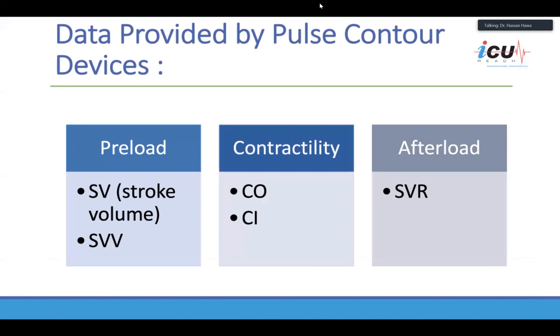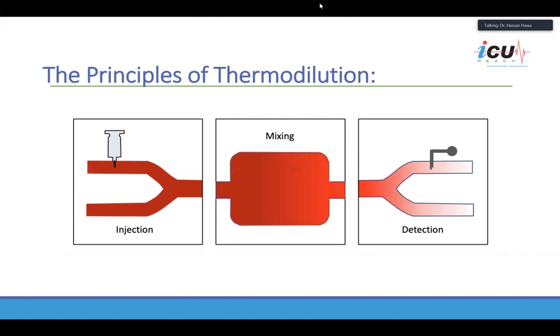The data you would get from pulse contour analysis devices includes preload indicators such as stroke volume and stroke volume variation (SVV), contractility indicators, as well as afterload.